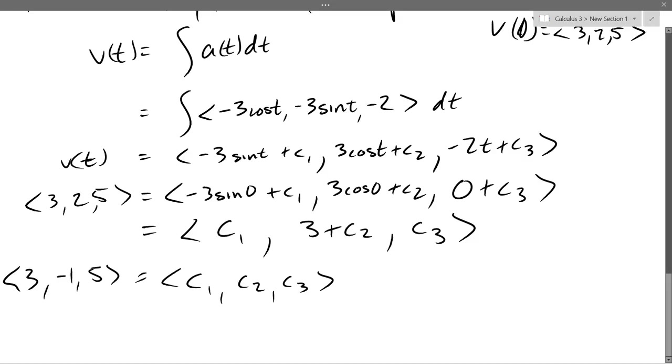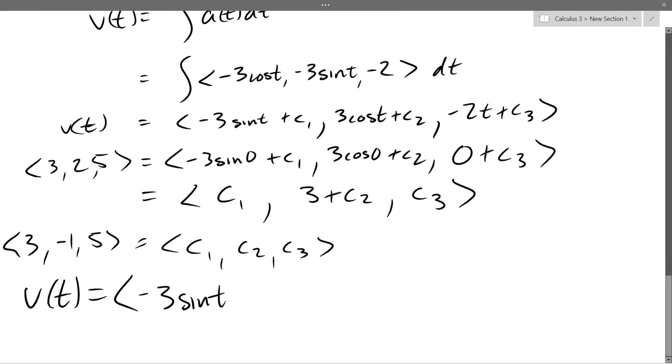So I want to write out the full velocity equation. And I'm going to put the numbers in for c1, c2, and c3. These are our initial values. So our final, v of t is negative 3, sine t, plus 3. Our y is 3 cos t, minus 1, and then negative 2t plus 5. So there's our final, our velocity equation.